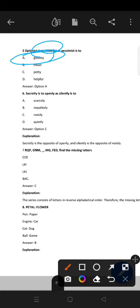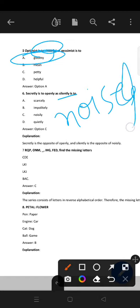Secretly is to openly as silently is to? So what is the opposite of secret? It's open. So what will be the opposite of silent? It will be noise. But here, it's an adverb: secretly, openly. So what will be the opposite of silently? It will be noisily. So where are you getting noisily? Option C, yes. So option C is correct.